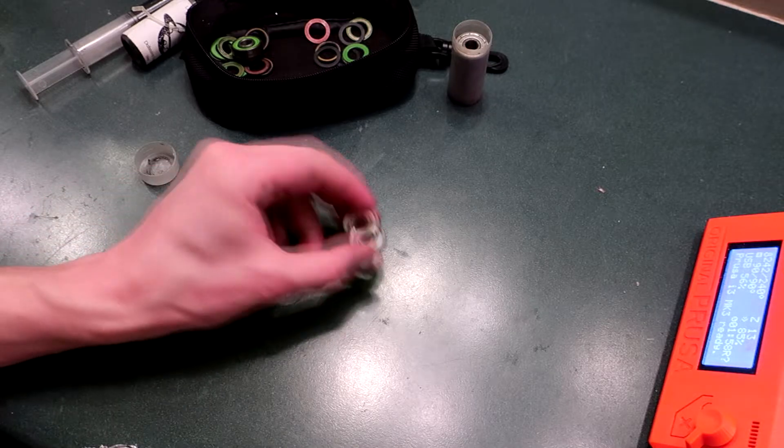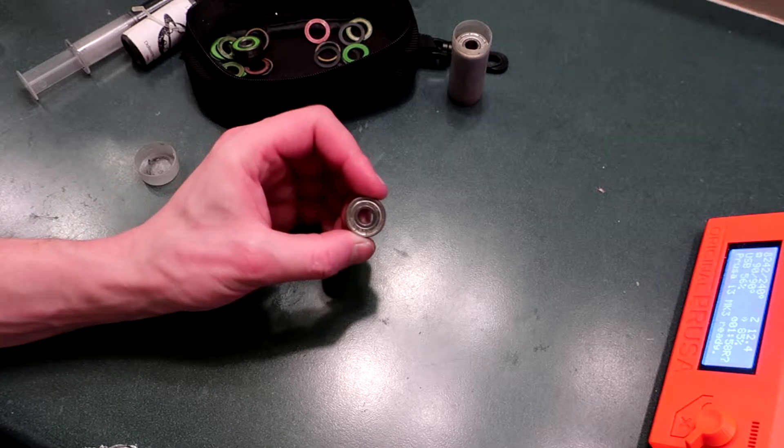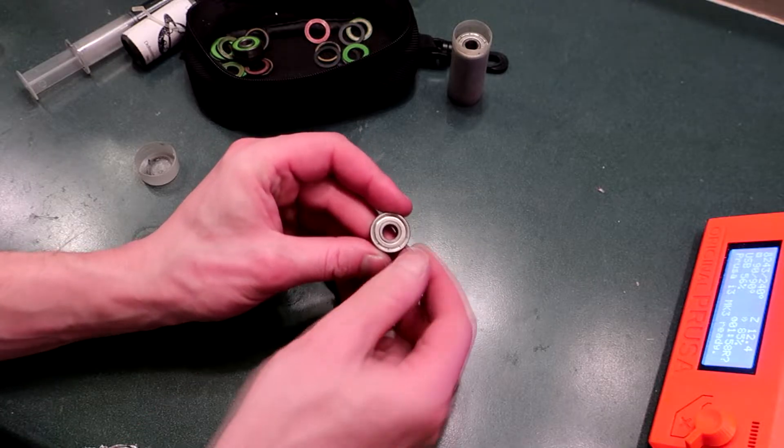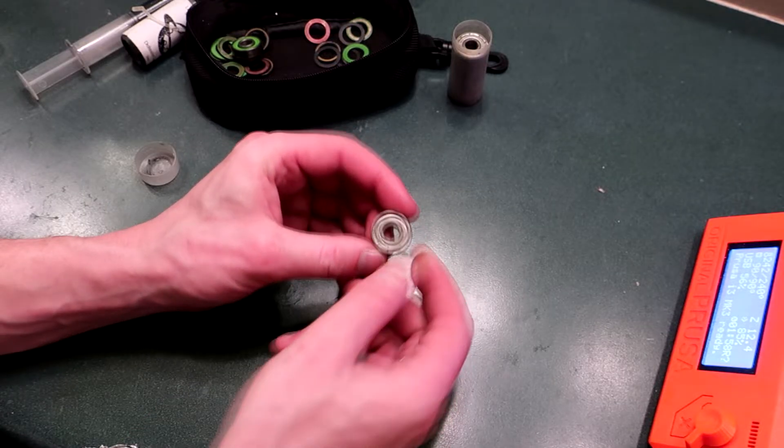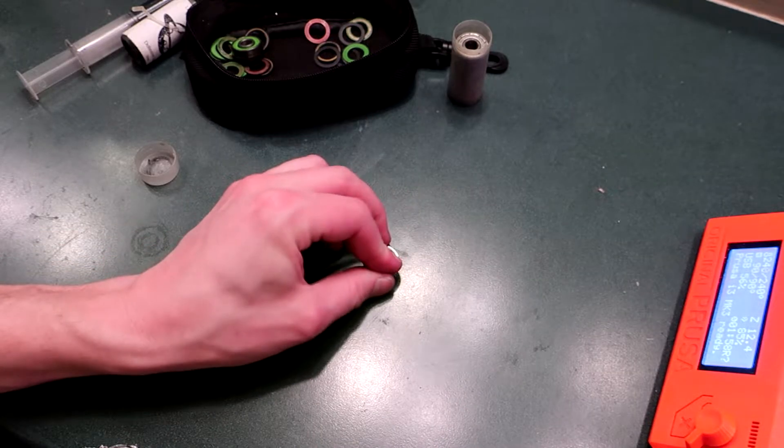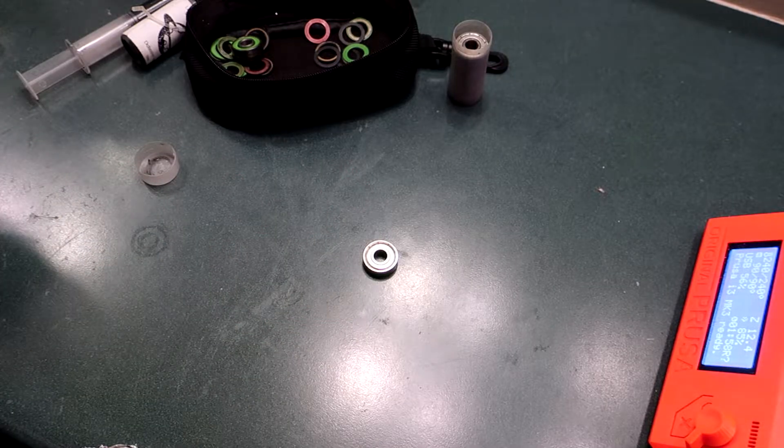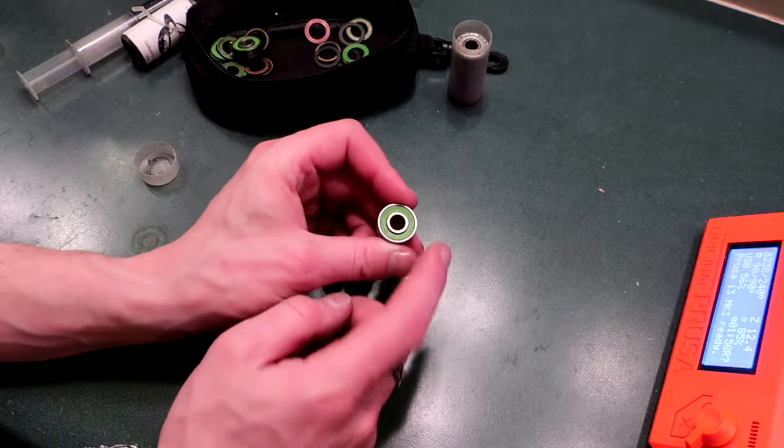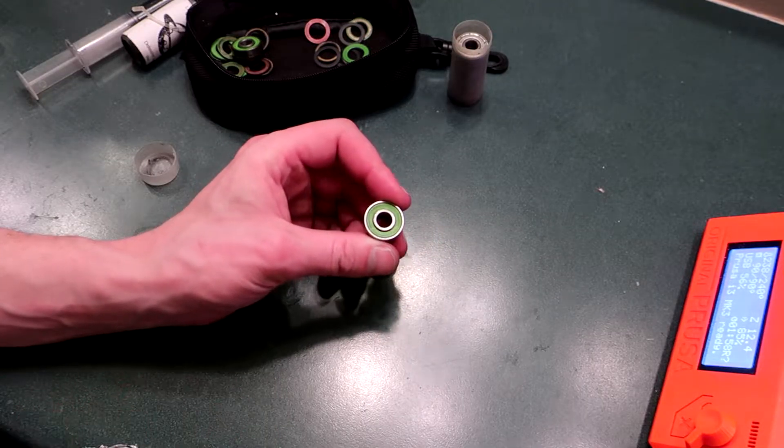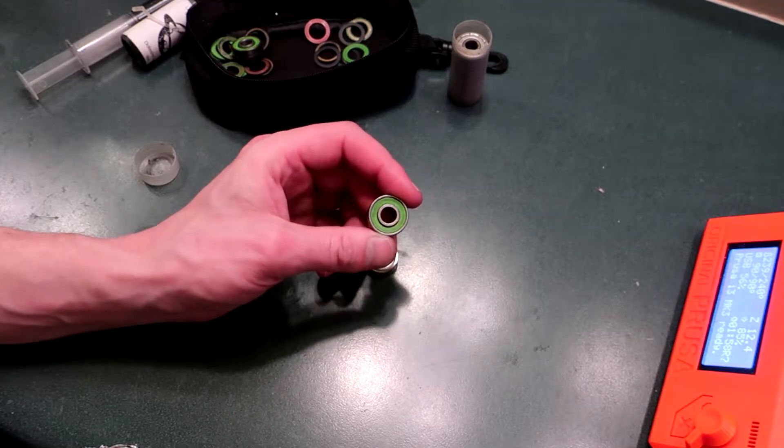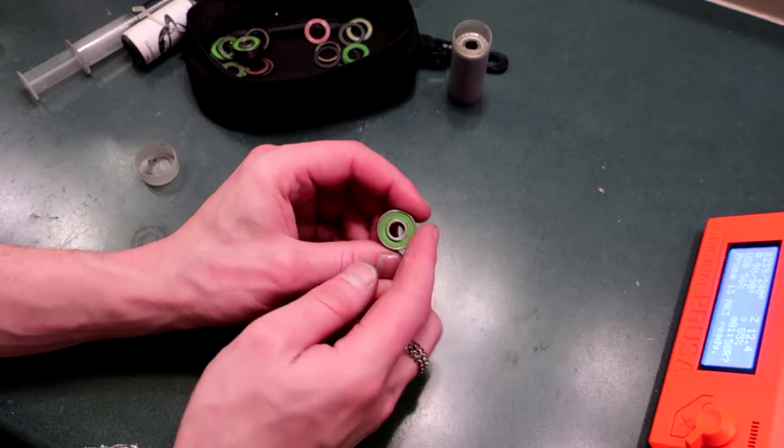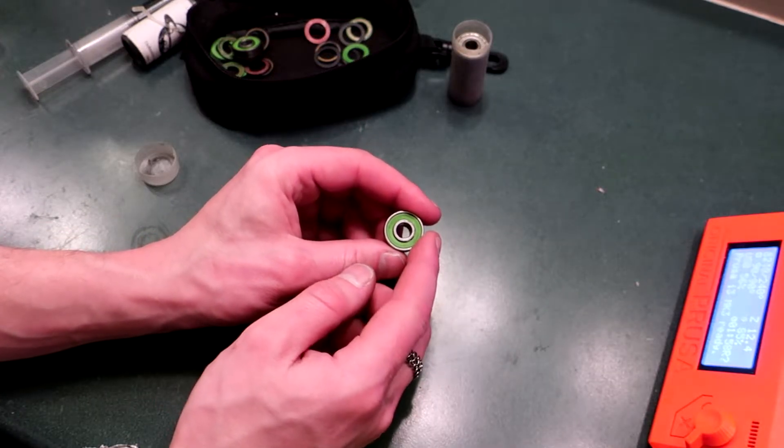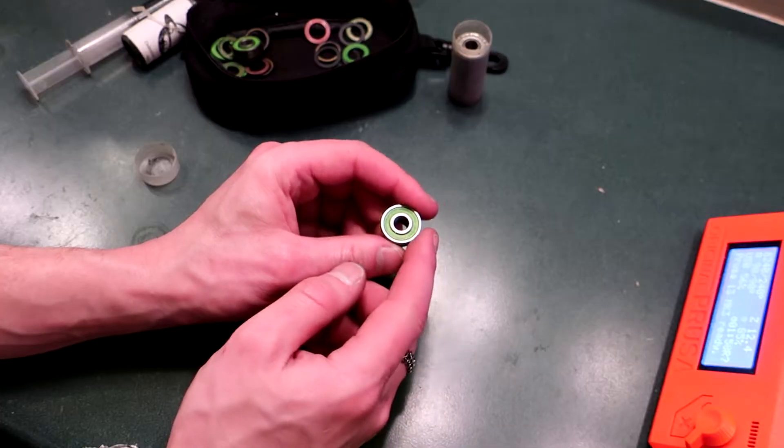Alright, so today I'm going to be talking about what to do about bearings that have crimped-on metal shields. Some bearings come with removable rubber seals and these are very easy to deal with. If you want to do maintenance on your bearings or change the grease or just get them clean, it's very easy to remove the rubber seals and get access to the bearing.